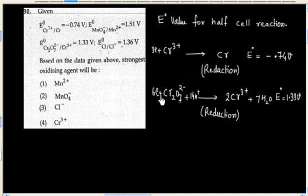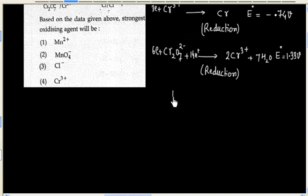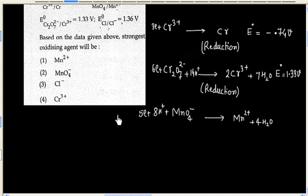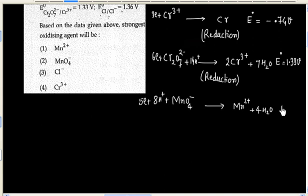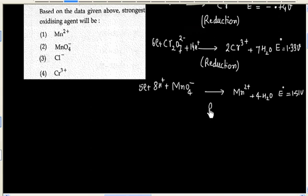Now next we have MnO₄⁻ goes to Mn²⁺. So we can balance this half-cell. E° value is 1.51 volt and this is also a reduction half-cell.